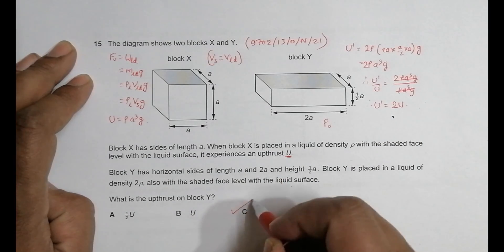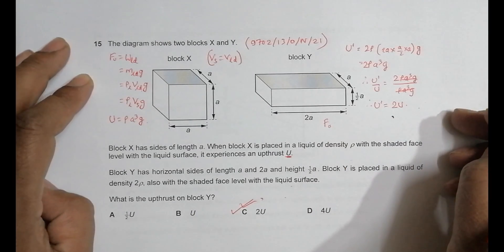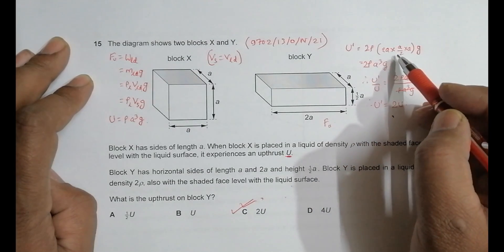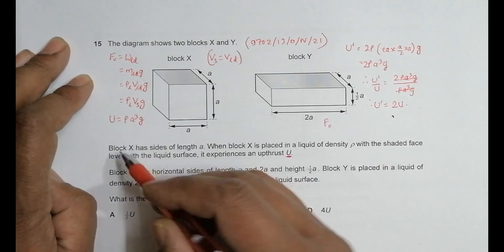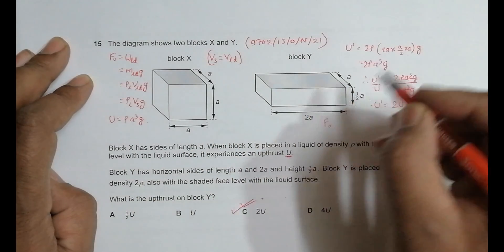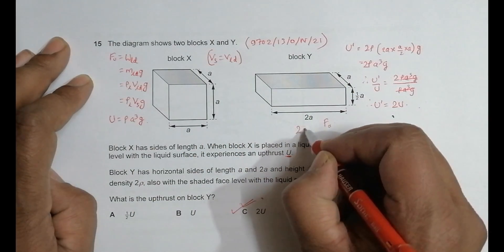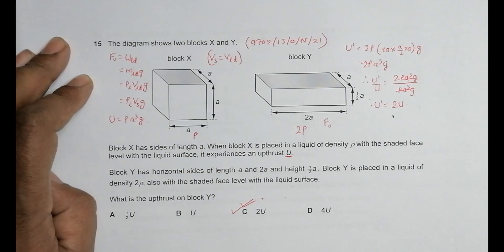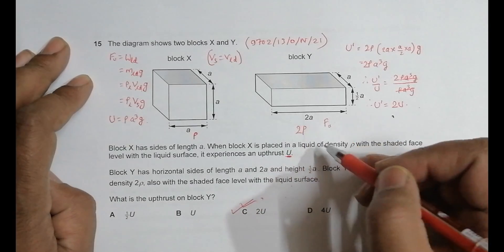in both cases—it's a³ in both. The only difference is the density of the liquid: 2ρ here and ρ here. So the volume was the same, but because of the different densities, the upthrust was different.